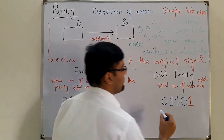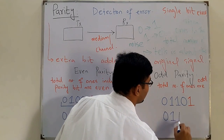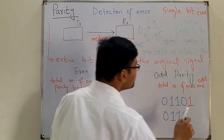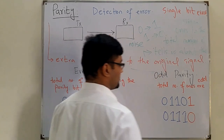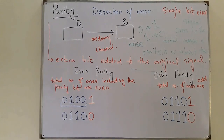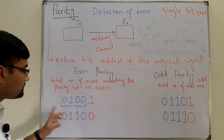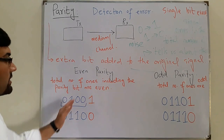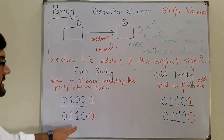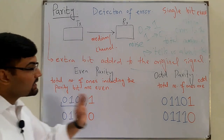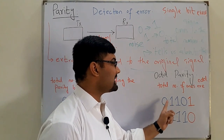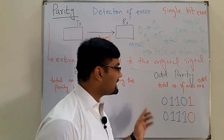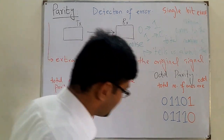If you have 0111 and want odd parity, you already have three ones which is odd, so the parity bit is low. To summarize: in even parity, if the original ones count is odd you place a 1, if even you place a 0. In odd parity, if the original ones count is even you place a 1, if odd you place a 0.